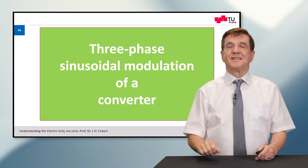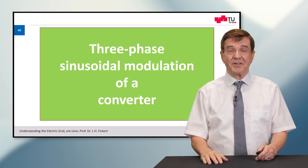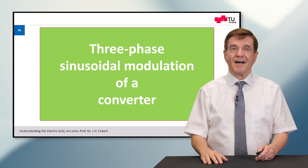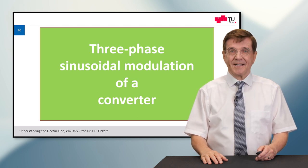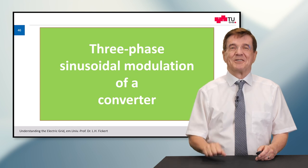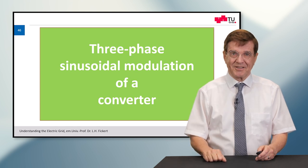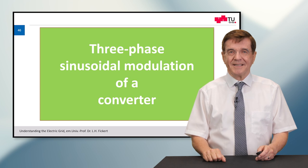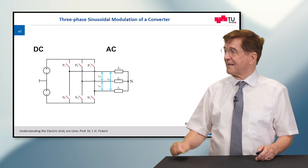Now let's look at the three-phase sinusoidal modulation of a converter. You know electric power grids are three-phase systems. And now we must generate three different phases which are very similar to each other from the DC. And this is done by this modulation.